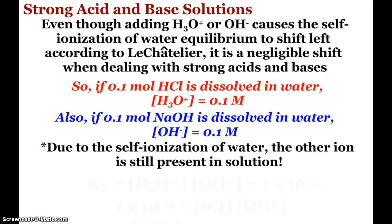So with our strong acid and base solutions, even though adding hydronium or hydroxide does indeed cause the self-ionization equilibrium to shift left, according to Le Chatelier, it's really an insignificant shift. And again, strong acids and bases. So if 0.1 mole of hydrochloric acid is dissolved in water, then we say that the concentration of hydronium is 0.1 molar. Same thing with a strong base, sodium hydroxide. If 0.1 moles is dissolved in the water, then the concentration of hydroxide is 0.1 molar.